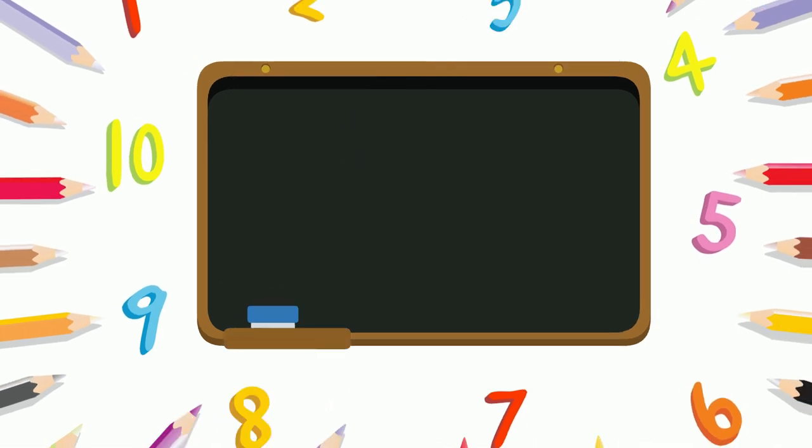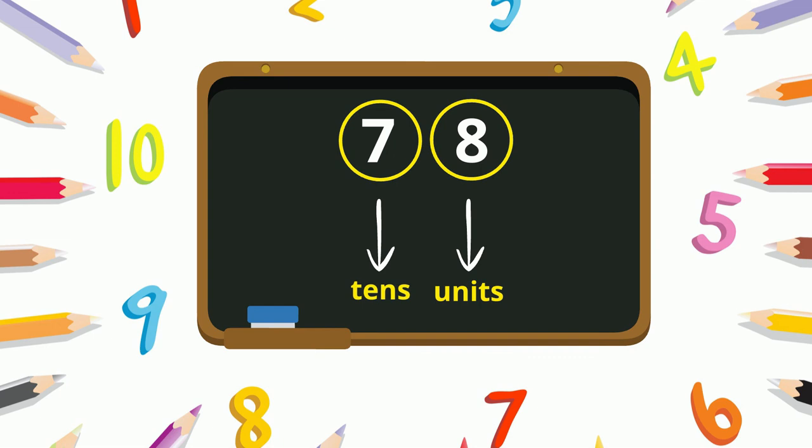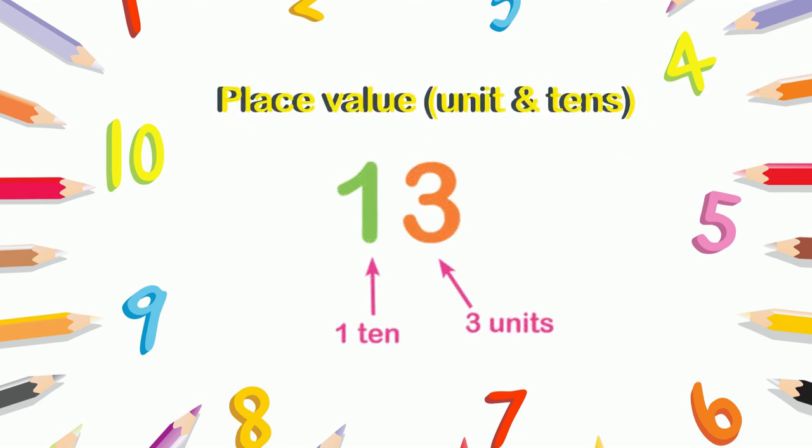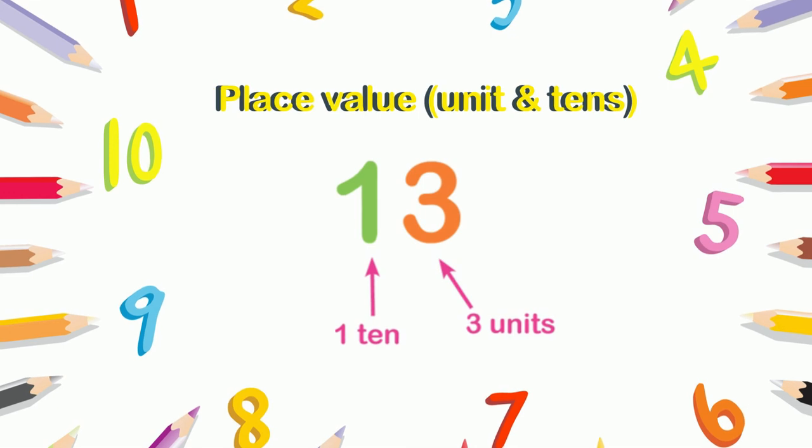Similarly, in number seventy-eight, there are eight units—eight separate flowers—and seven tens, seventy flowers. We hope now you have learned about place value, units and tens. If some concepts are not clear, then replay the video again and again. Still, if you have some questions, then ask your teacher.